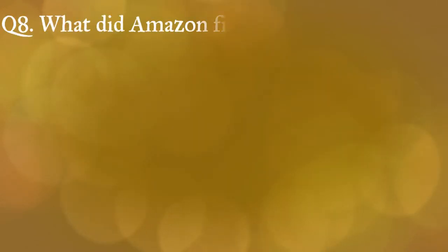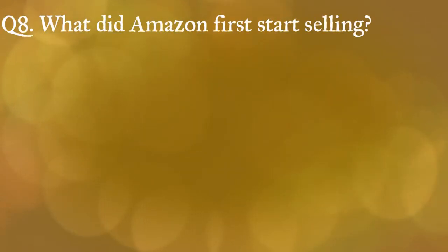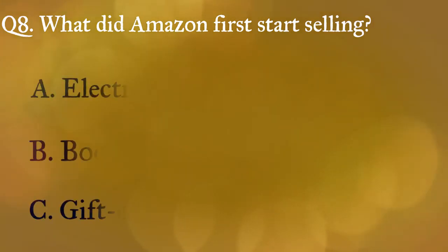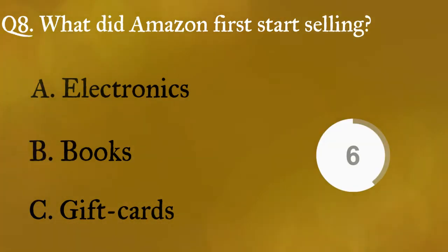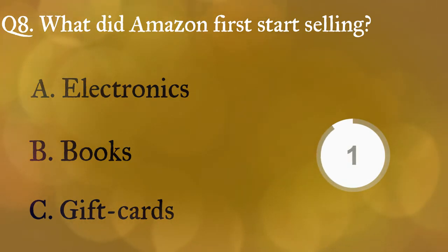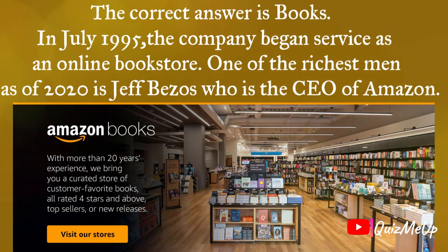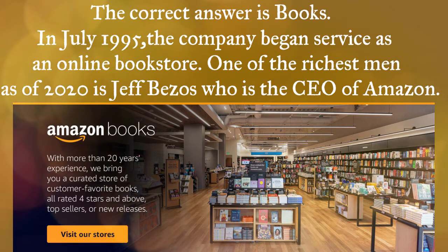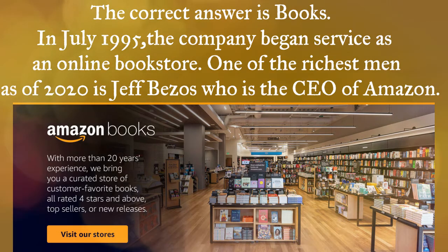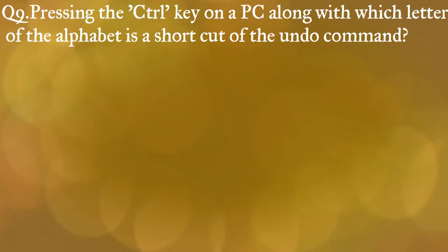Question eight: what did Amazon first start selling? A) electronics, B) books, C) gift cards. The correct answer is books. In July 1995, the company began service as an online bookstore. One of the richest men as of 2020 is Jeff Bezos, who is the CEO of Amazon.